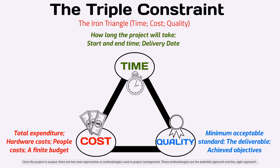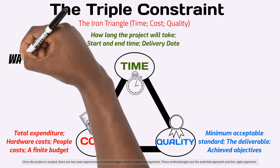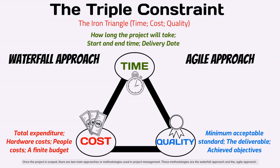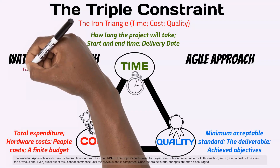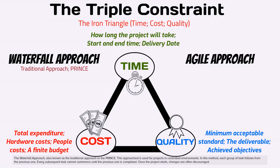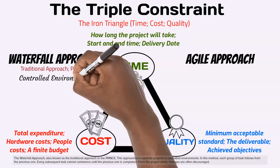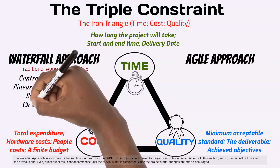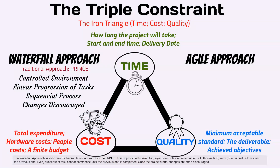Once the project is scoped, there are two main approaches or methodologies used in project management. These methodologies are the waterfall approach and the agile approach. The waterfall approach, also known as the traditional approach or PRINCE, is used for projects in controlled environments. In this method, each group of tasks follows from the previous one. Every subsequent task cannot commence until the previous one is completed. Once the project starts, changes are often discouraged.